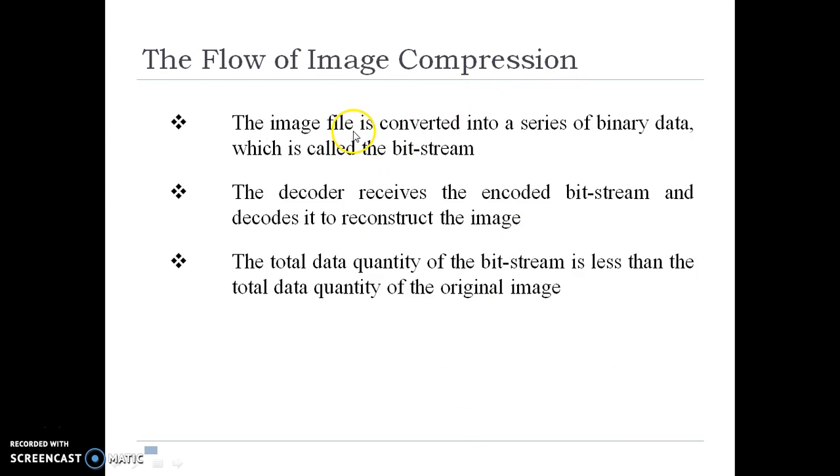The flow of image compression: first, the image file is converted into a series of binary data called the bit stream. The decoder receives the encoded bit stream and decodes it to reconstruct the image. The total data quantity of the bit stream is less than the total data quantity of the original image.